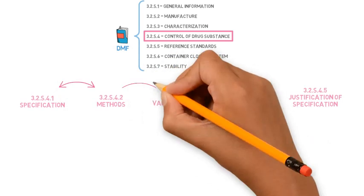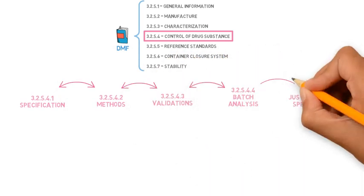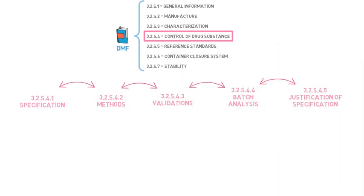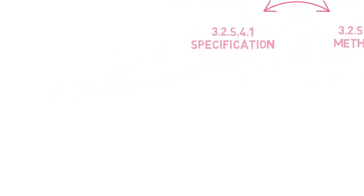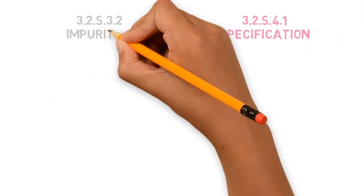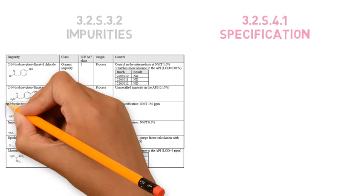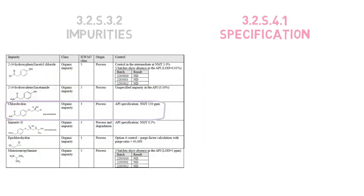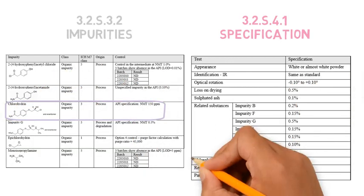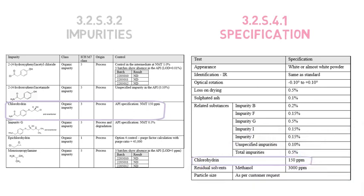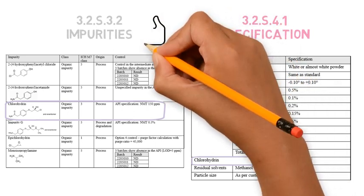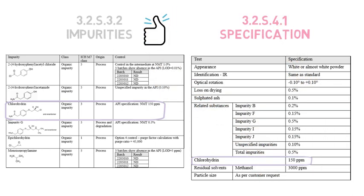The information needs to be coherent throughout these different subsections and also in line with the previous DMF sections. For example, if the Impurity section describes that a certain impurity is controlled in the API specification, this should be reflected here. We don't want any surprises here regarding the control of impurities because in theory everything was already well explained in the previous section, so we know what to expect.